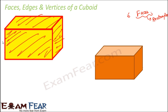Any two faces meet at a line segment, and that line segment is called an edge. For example, face number one and face number two have one side in common — that side is an edge. Face number one and face number three have this side in common — that side is an edge. Face number two and three will have this side in common, and that is also an edge. So each line segment that is a common boundary between two faces is termed an edge.